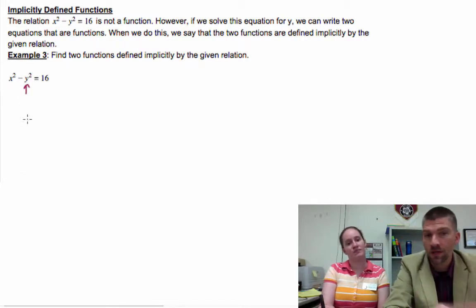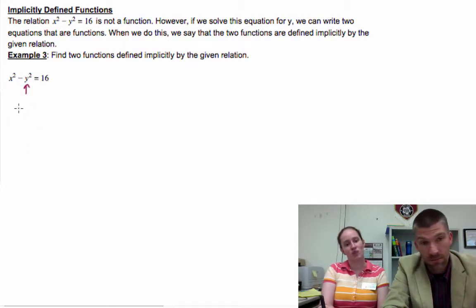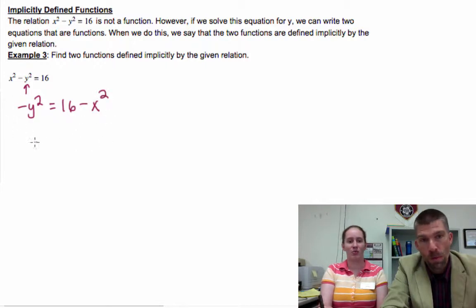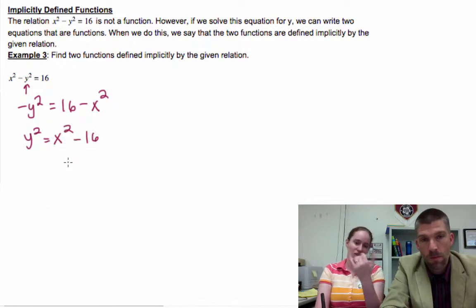In other words, this is how you would need to graph it on your calculator. So if I solve for y², I've got to subtract x² over. That's my first step. I would multiply both sides by a negative one, so that gives me positive x² - 16.